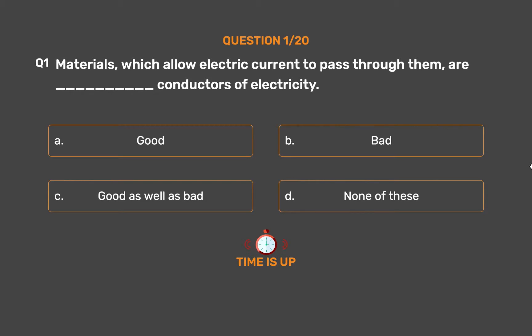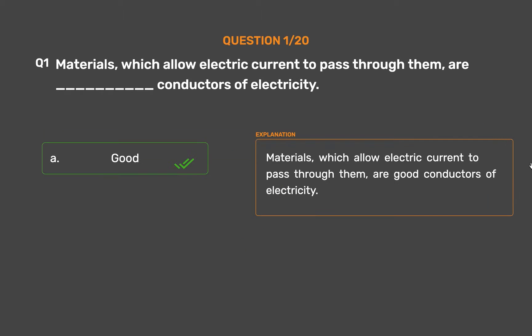The correct answer is Option A: Good. Materials which allow electric current to pass through them are good conductors of electricity.